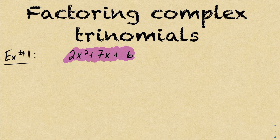Notice here, I can't factor the 2 out. Had this been an 8 instead of a 7, I could factor the 2 out and then we'd be left with a simple trinomial. This is not the case here. So how do you factor using this method called decomposition?